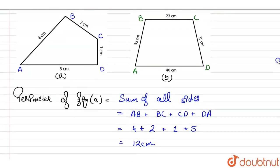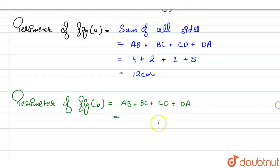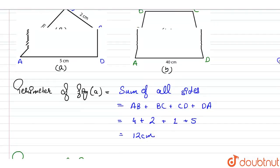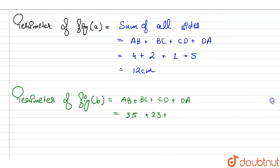So side AB is given to us as 35 and BC is 23. This is 35 and BC is 23, plus CD is given to us as 35, and AD or DA is also 40. So CD is 35 and DA or AD is 40. So if we sum them up, this is 35 plus 23 plus 35 plus 40, that will come out to be equals to 133 centimeters.